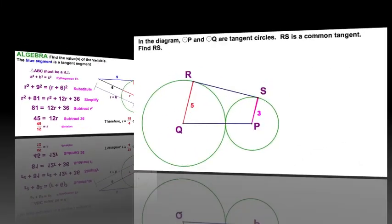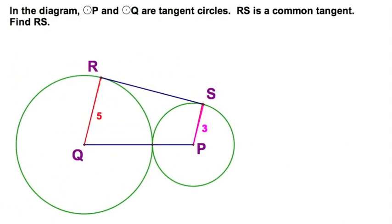Now here's a fun problem that takes us back to our constructions, and we've got two circles, we have a common exterior tangent segment, the two circles are externally tangent to each other at this point, and that means QP and this point are collinear, and I've got the radii of 5 and 3 respectively.